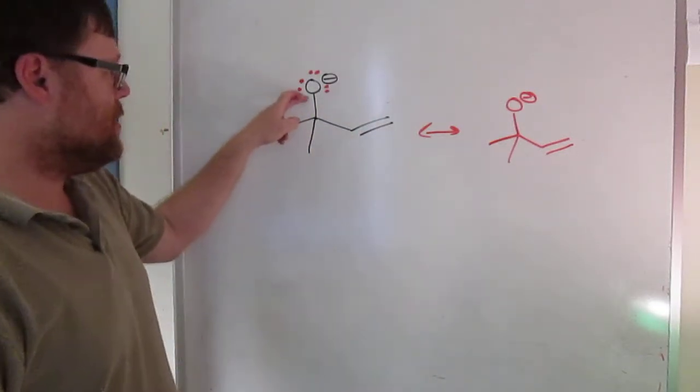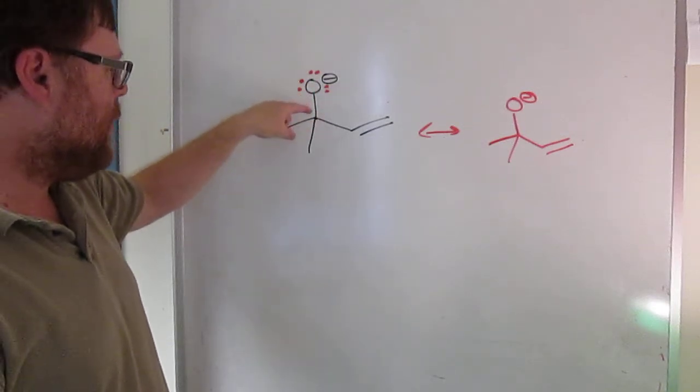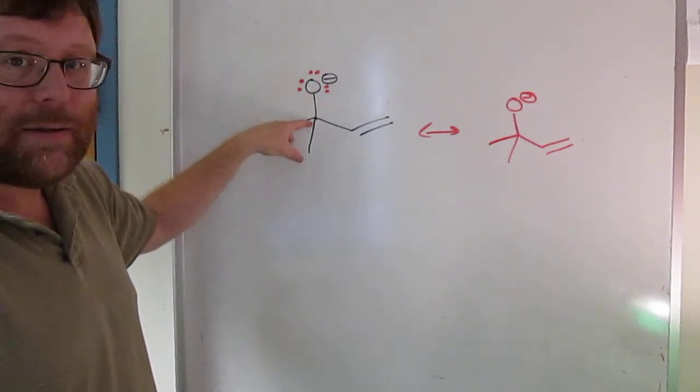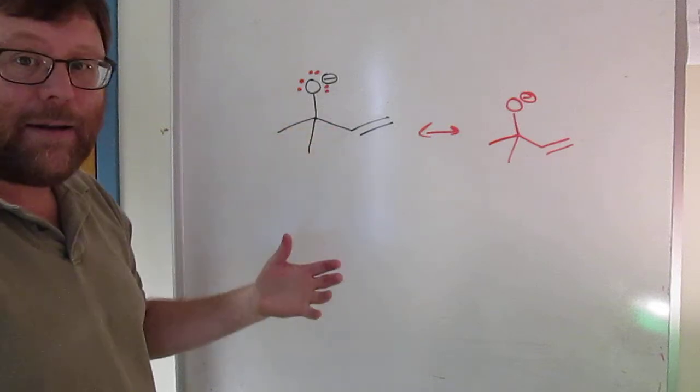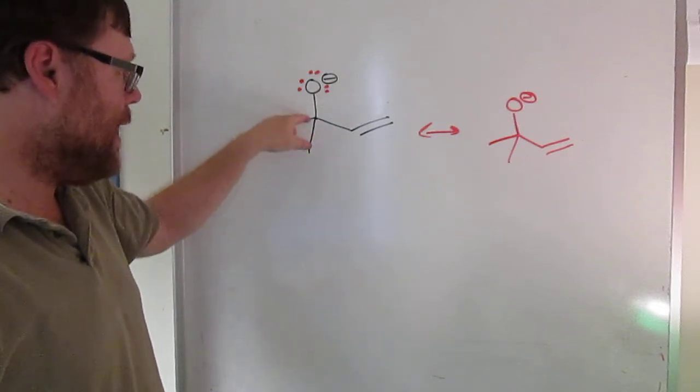There's no way to delocalize this charge. This charge is localized on the oxygen. There's no way for these lone pairs to push down. This carbon already has, the carbon the oxygen is bonded to has eight electrons already. It's got four single bonds. So it can't accept another bond.